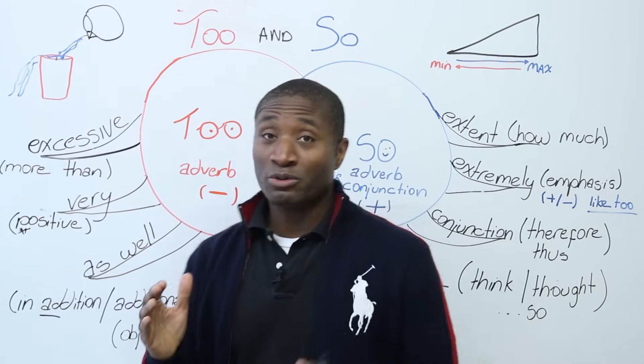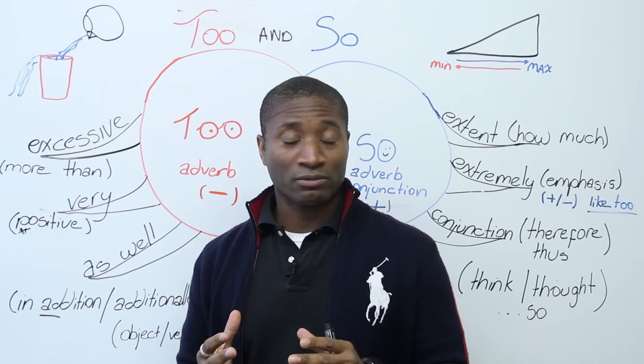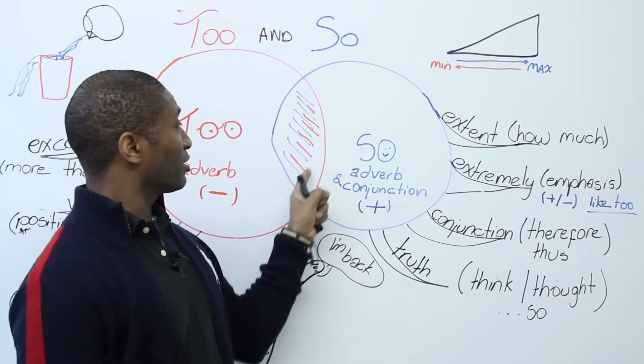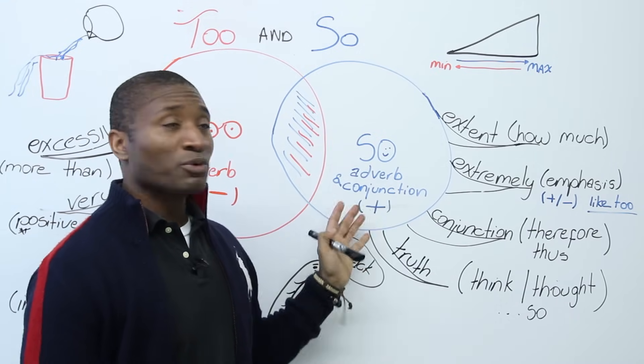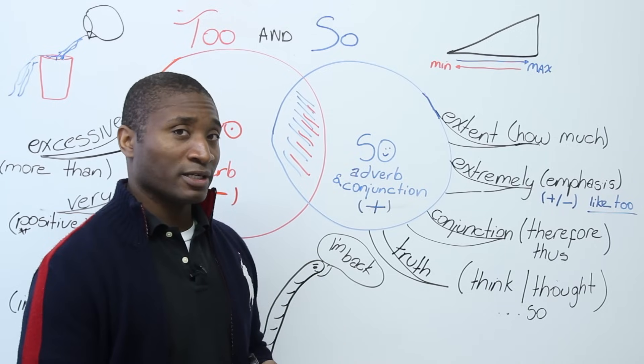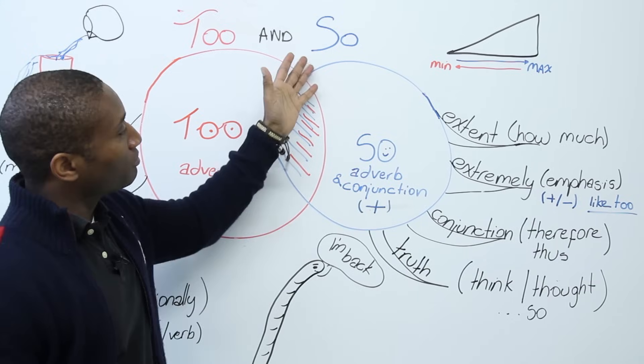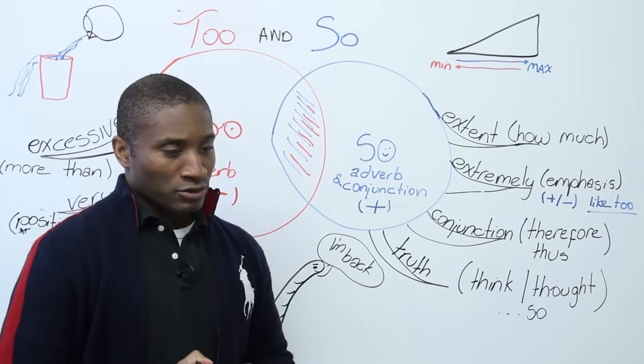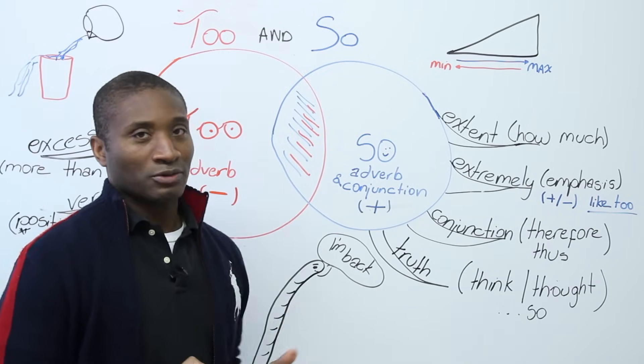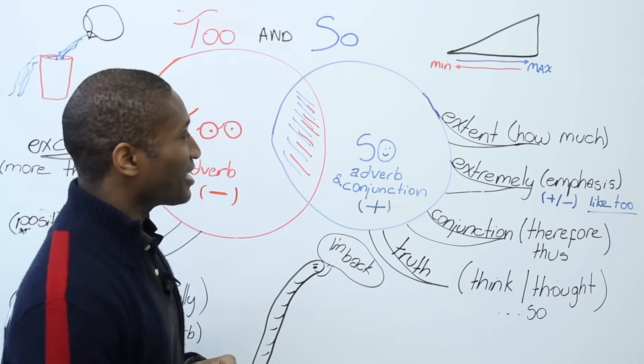Now, I told you too and so get confused. I'm going to tell you how they're similar, and that's why this diagram has this funny part where it's red and blue, but we're going to work specifically on so now. Are you ready? So, let's go. All right. So, what does so mean? So, la, ti, do. Well, we're not singing.